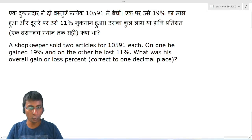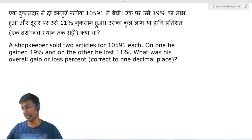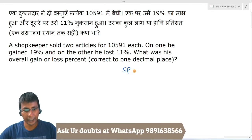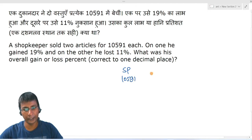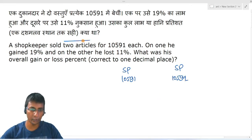A shopkeeper sold two articles for 10591 each. On one he gained 19% and on the other he lost 11%. What was his overall gain or loss percent correct to one decimal place? You are given the selling price of 10591. I've written it twice because he sold two articles.